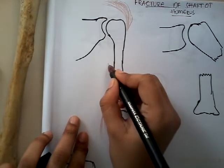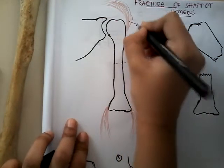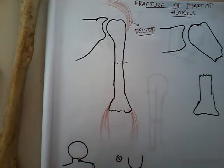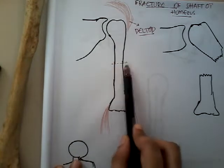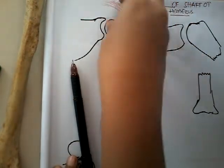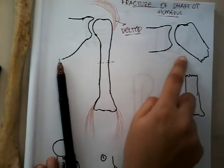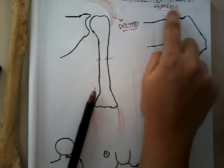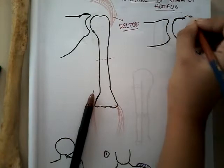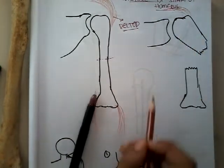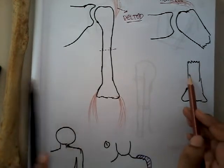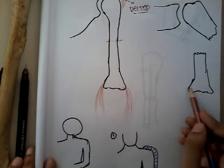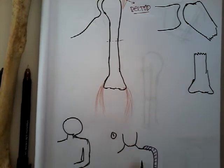If there is a fracture here, the deltoid muscle — which is a powerful abductor of the arm — will pull the proximal fragment towards itself. As a result, there is lateral displacement of the proximal fragment due to the deltoid attachment. The distal fragment is in adduction, and there can also be a little lateral angulation of the distal fragment.